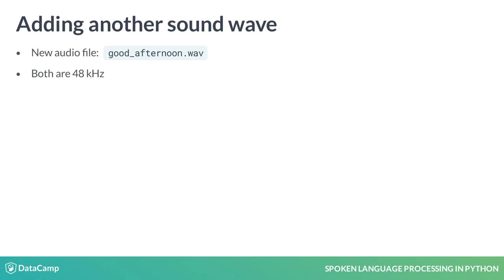Both the good morning and good afternoon audio files are 48 kilohertz, or 48,000 frames per second. You'll see in future lessons that having your audio files at the same frame rate and ensuring the same data transformations are made on each of them is important. This is because if they're different, we've got the potential for data mismatches, which will prevent us from further processing.